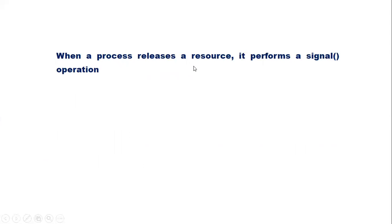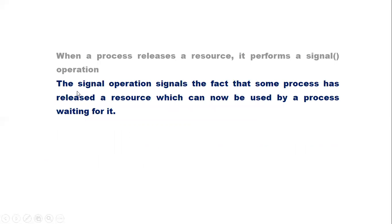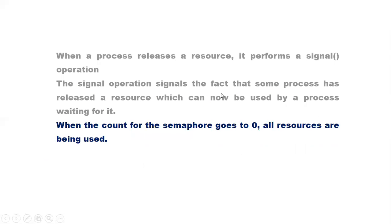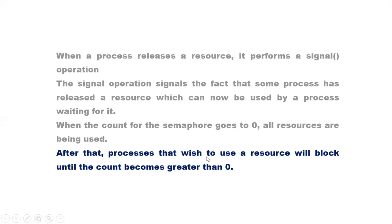When a process releases a resource, it performs a signal operation. The signal operation signals the fact that some process has released a resource, which can now be used by the process waiting for it. When the count for the semaphore goes to 0, all resources are being used. After that, a process that wishes to use a resource will block until the count becomes greater than 0.